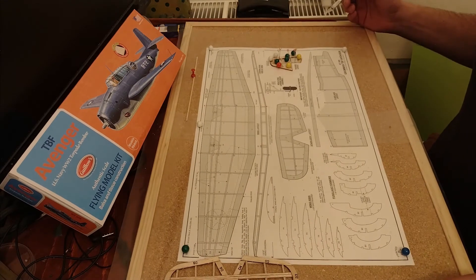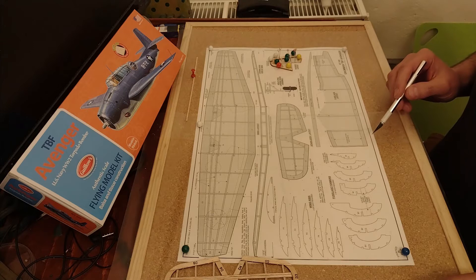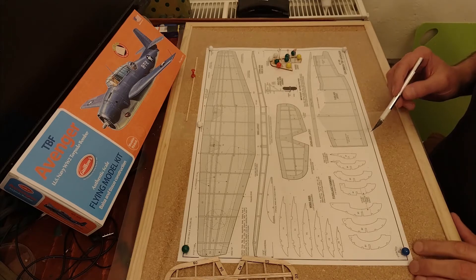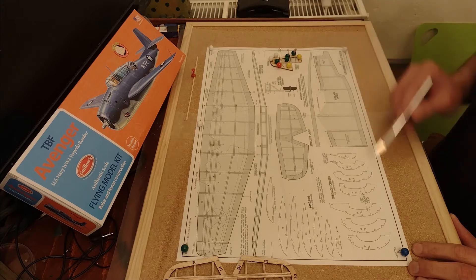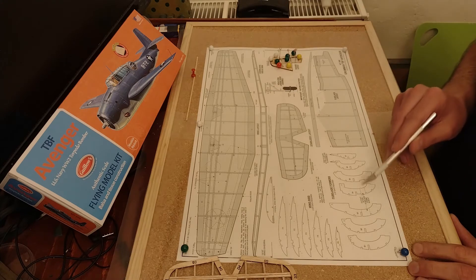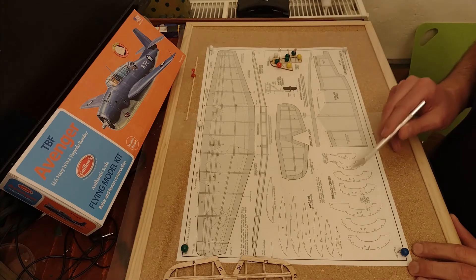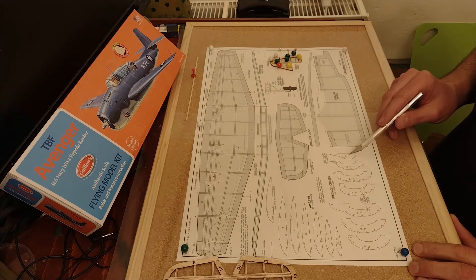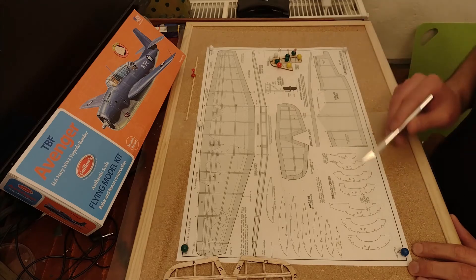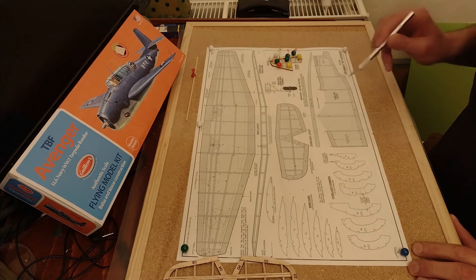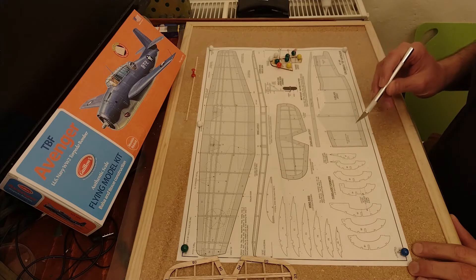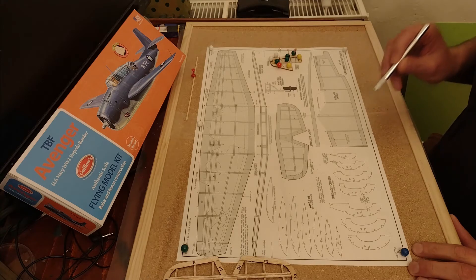The next challenge is the fuselage. This is a good design from Guillow's where we put down the keel on the bottom, pop out the pieces, sand the edges of the frames, then put in the longer ones and do it on the other side.